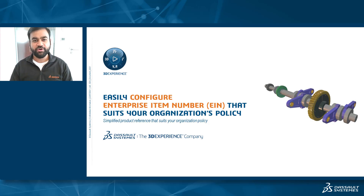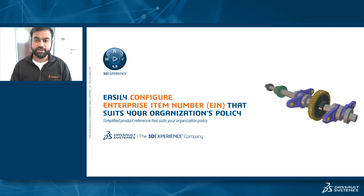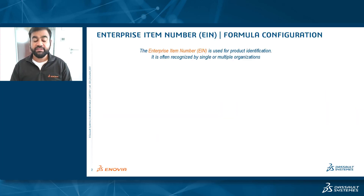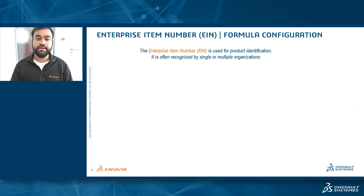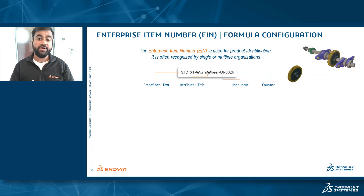Welcome to yet another video of Enovia tips and tricks. Today we'll see how your 3DEXPERIENCE platform administrator can easily configure the Enterprise Item Number that suits your organization policy and makes product referencing a lot easier. The Enterprise Item Number, also often termed as EIN, is used for product identification within single or sometimes multiple organizations that collaborate on product development. What you are seeing right now is an example of the EIN.